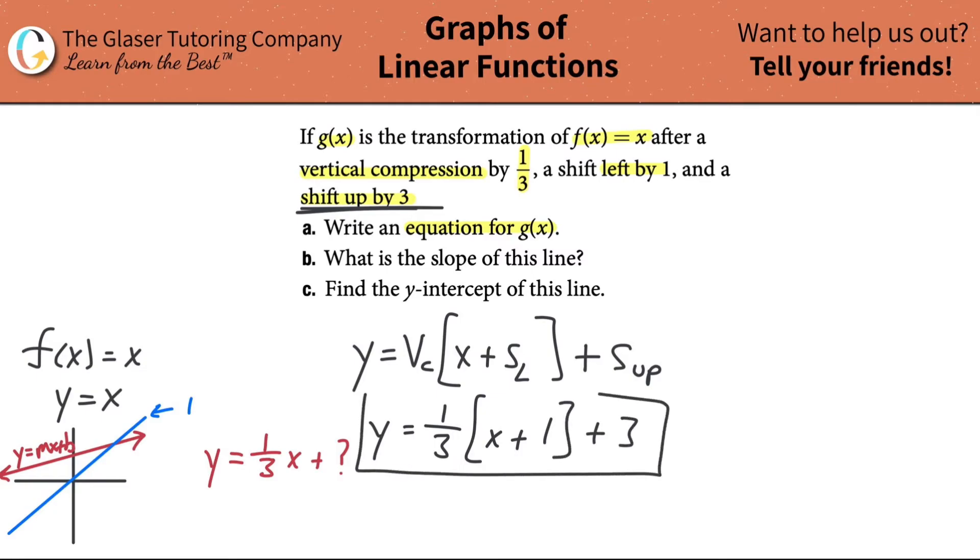I know that looks funky, but that's because it's not perfectly in the form y equals mx plus b. But watch what we can do. Can we just do some simplifications to get it into that form? Sure we can. We can take the one-third here and distribute it over each term. When we do that, we're going to get one-third x plus one-third, then plus the three. Don't forget about that.